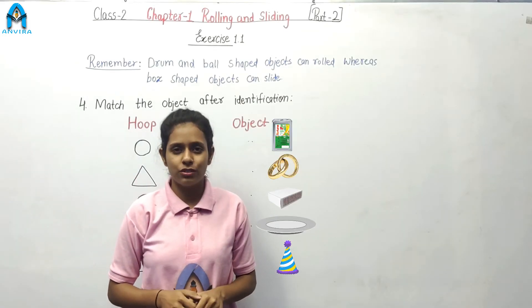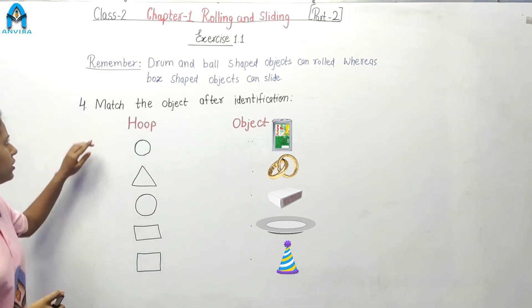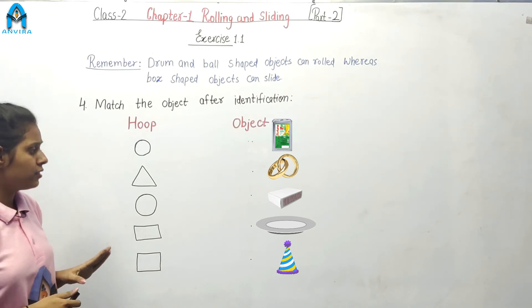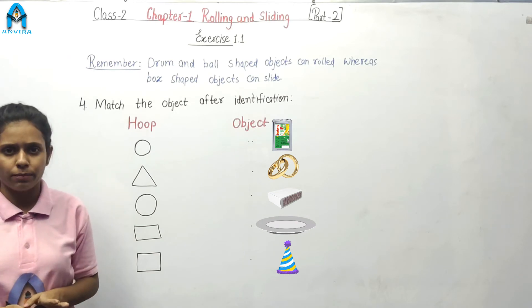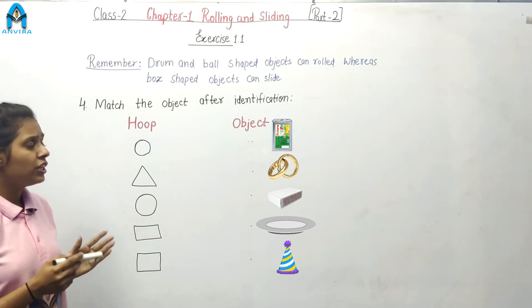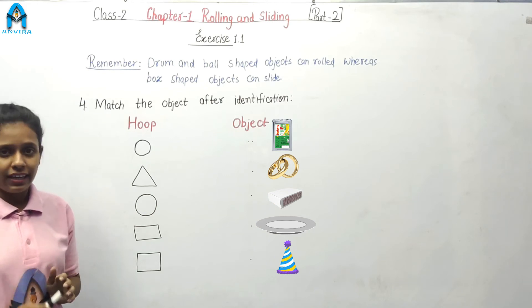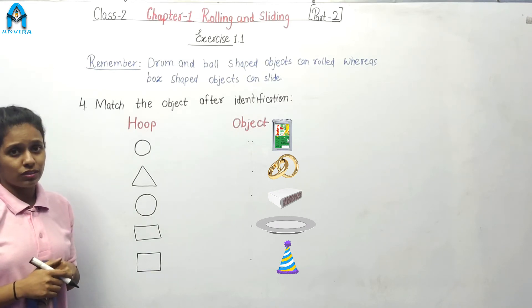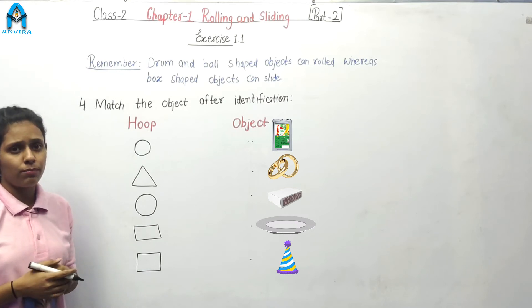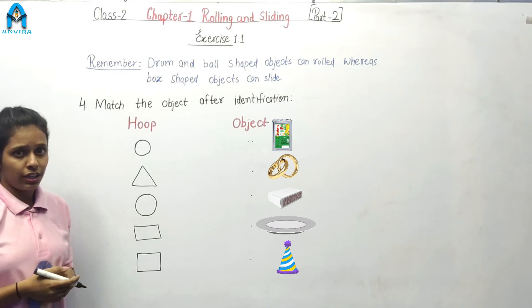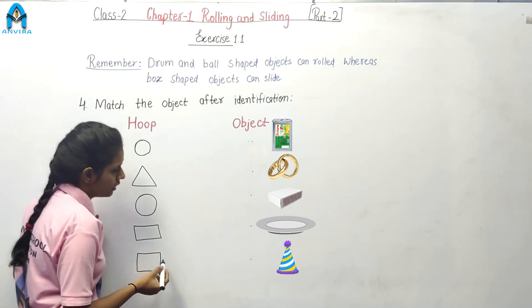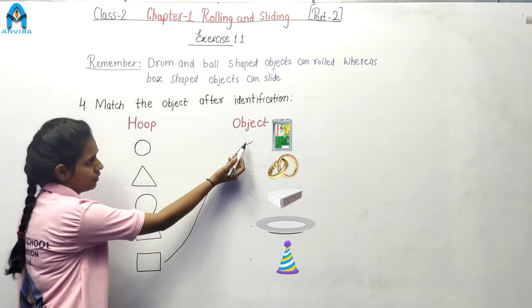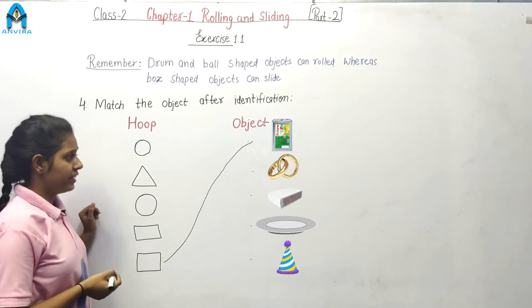Let's go to our next question — question number 4. First, read the question: match the object after identification. In this question, we find some objects and some shapes, and we match each object with its shape. Look at the first object — this is a tin box. The shape of a tin box is a square, so we match tin box with the square shape.